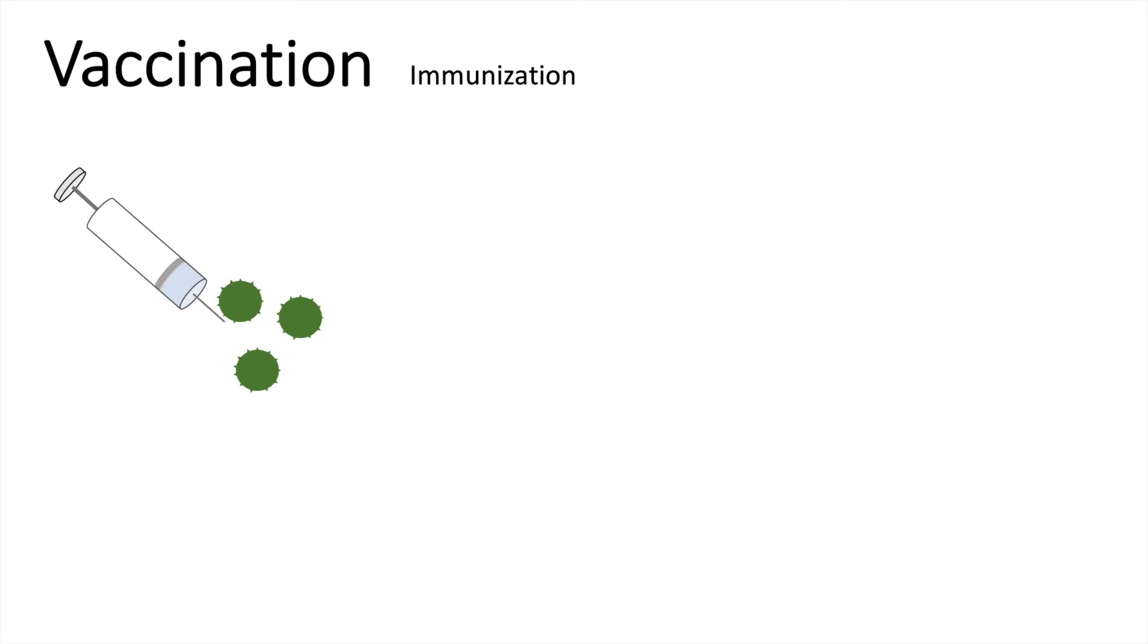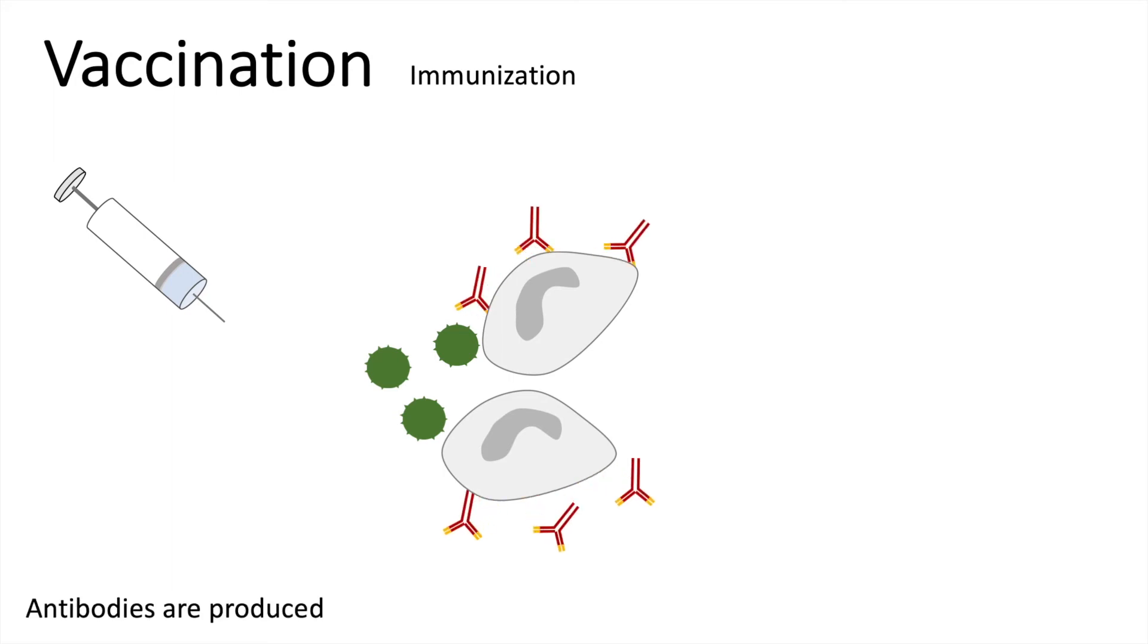When the patient gets vaccinated, pathogenic antigens enter the body. Now a specific type of white blood cells is mobilized and these plasma cells will start to produce antibodies against this specific invader. These antibodies are capable of binding to the surface of the pathogen and then macrophages or natural killer cells can eliminate those pathogens.